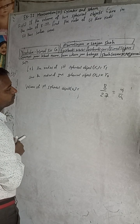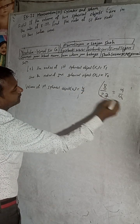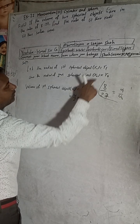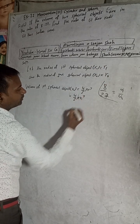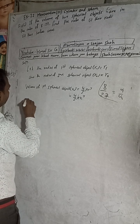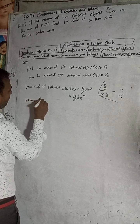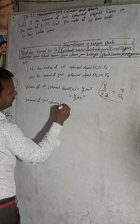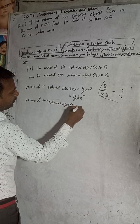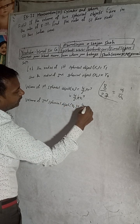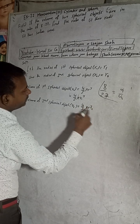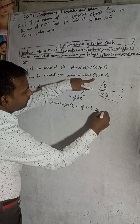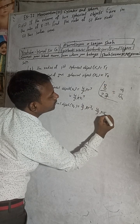The volume of the first sphere V1 is equal to 4 by 3 pi R1 cubed. The volume of the second sphere V2 is equal to 4 by 3 pi R2 cubed, where the radius of the second sphere is R2. So V2 equals 4 by 3 pi R2 cubed.